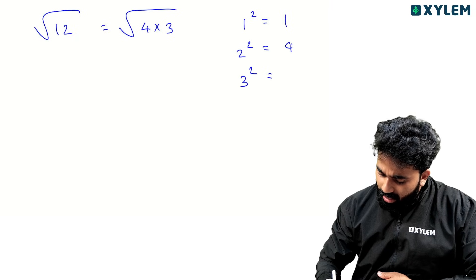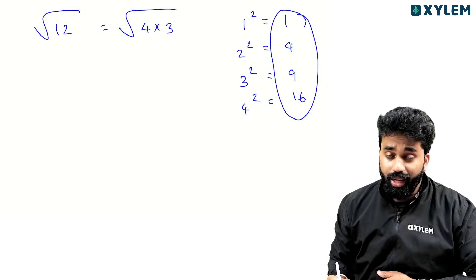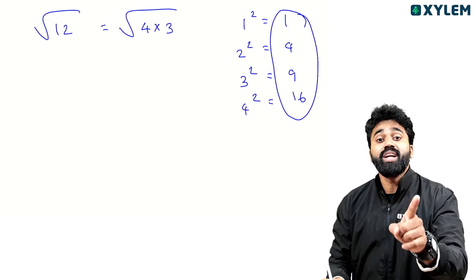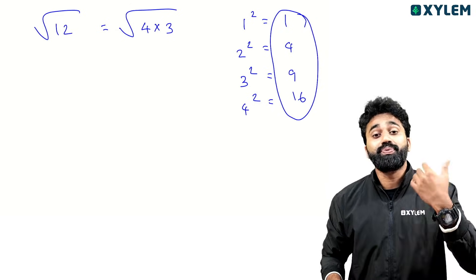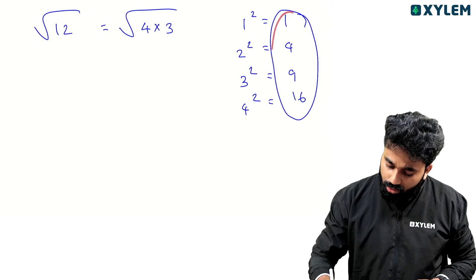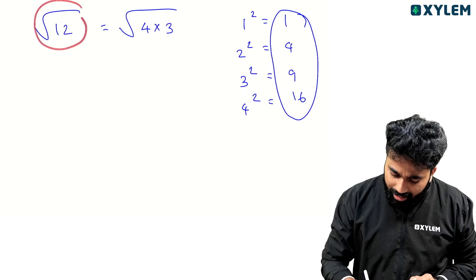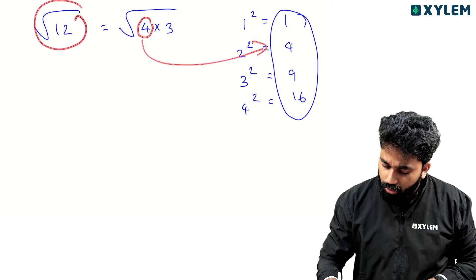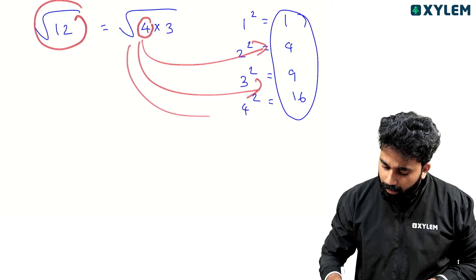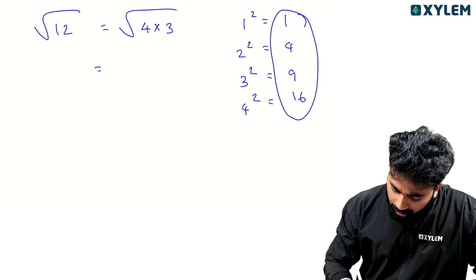4 squared is 9, 4 squared is 14. These numbers are perfect squares. A perfect square is correct. Now let's take this number. This number is a perfect square: 4, 9, 14. I will answer — it's easy to answer.